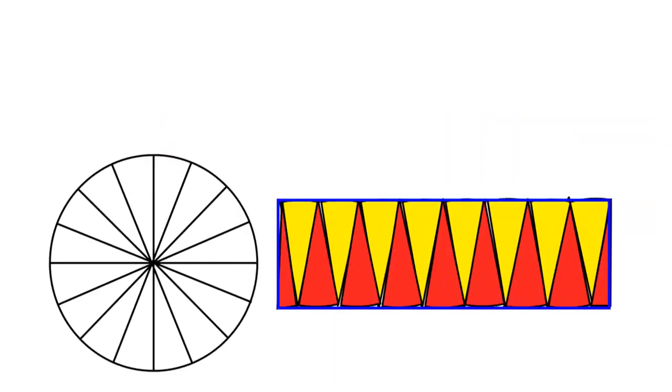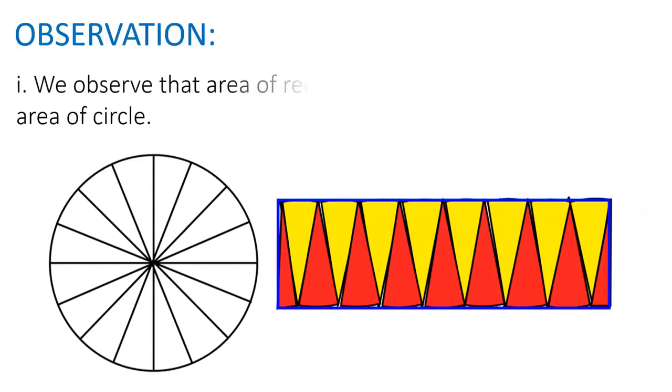Let us see the observation. First, we observe that area of rectangle so formed is same as the area of circle.